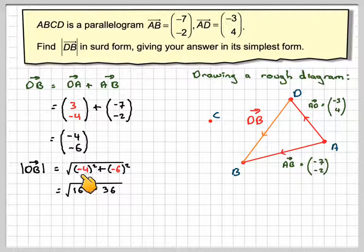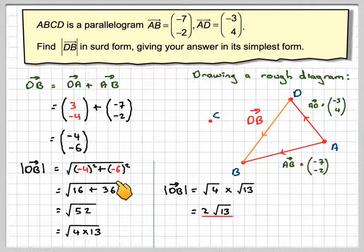Now if you don't put that in brackets, then you'll end up with minus 16 minus 36, and you won't be able to take the square root. So please remember to use brackets, particularly if the number is negative.